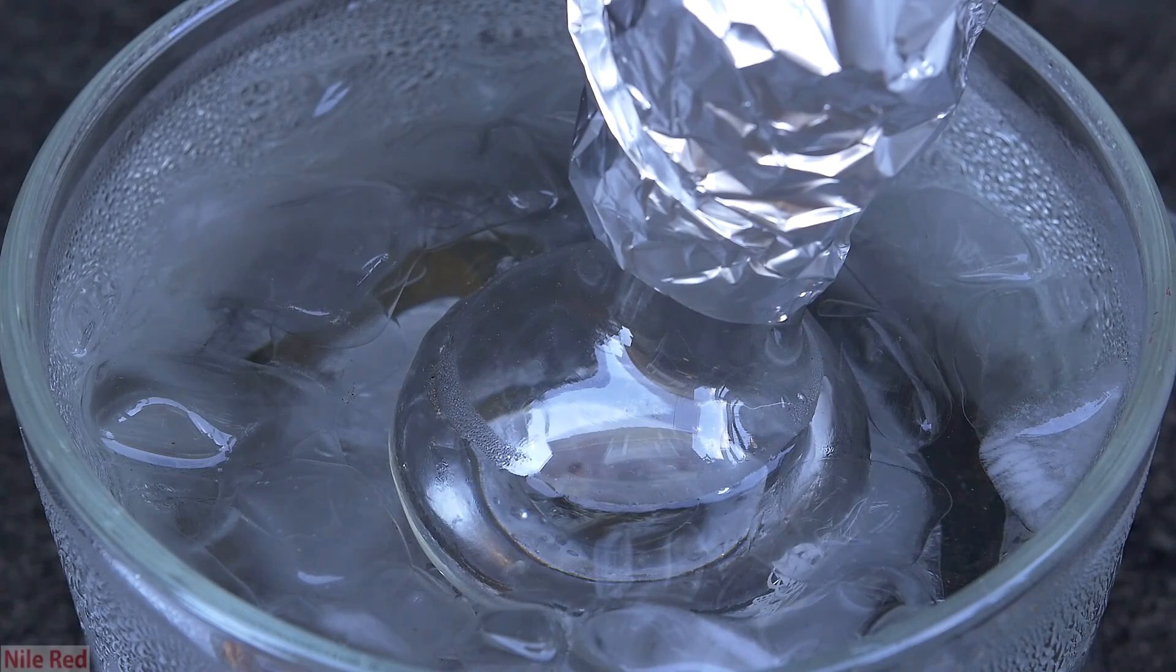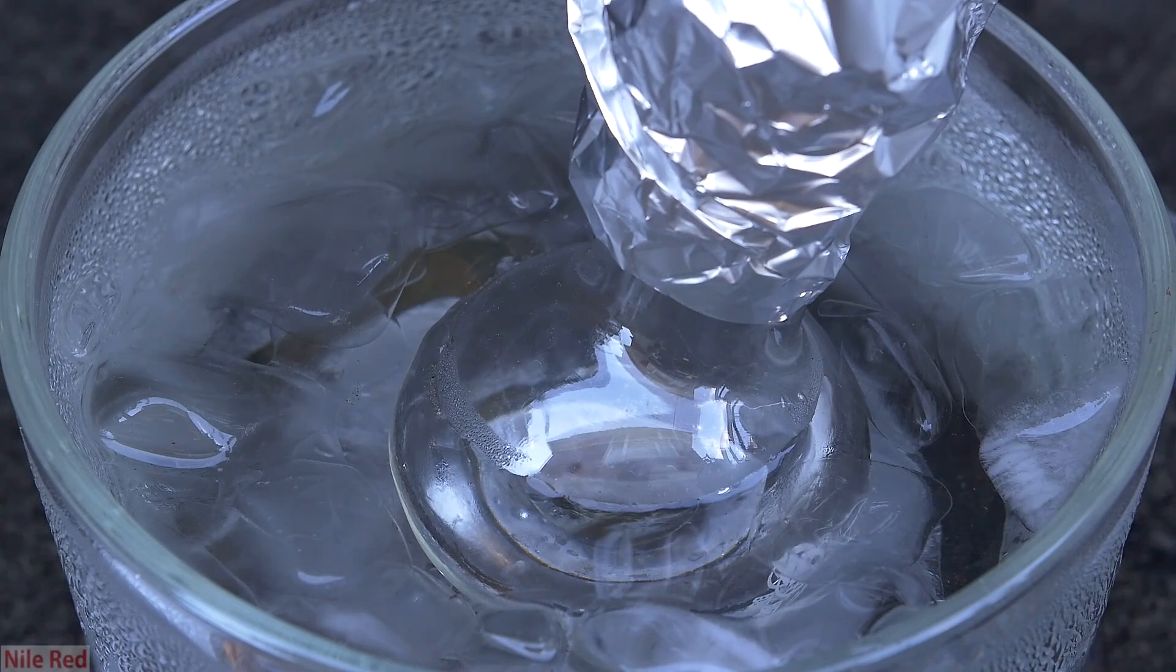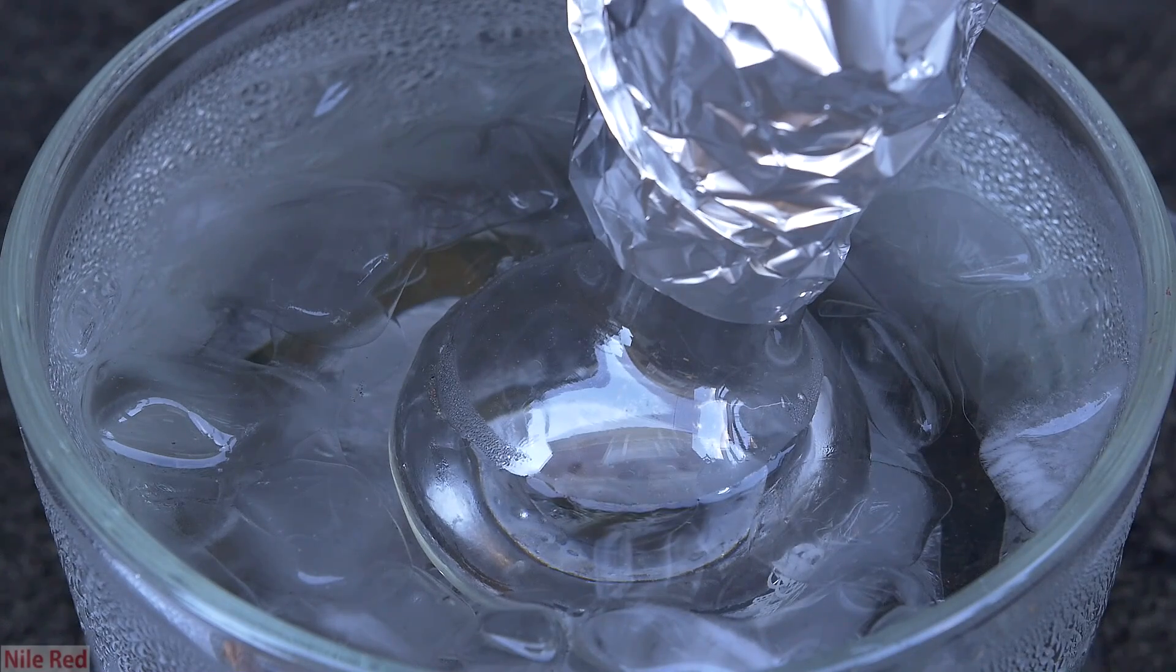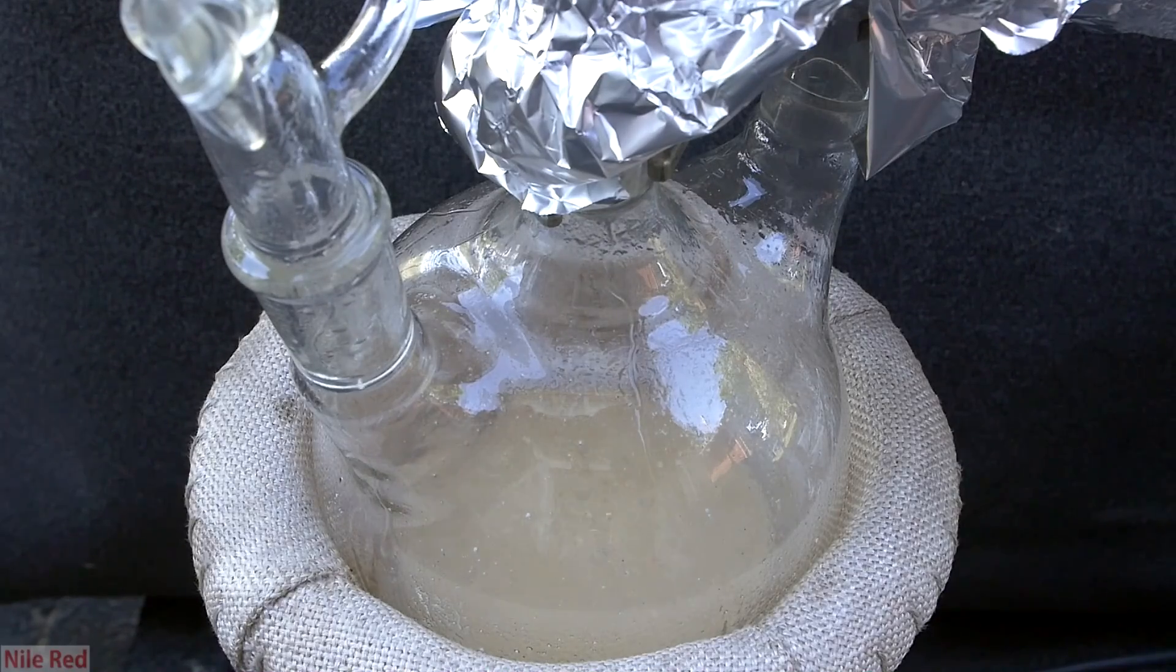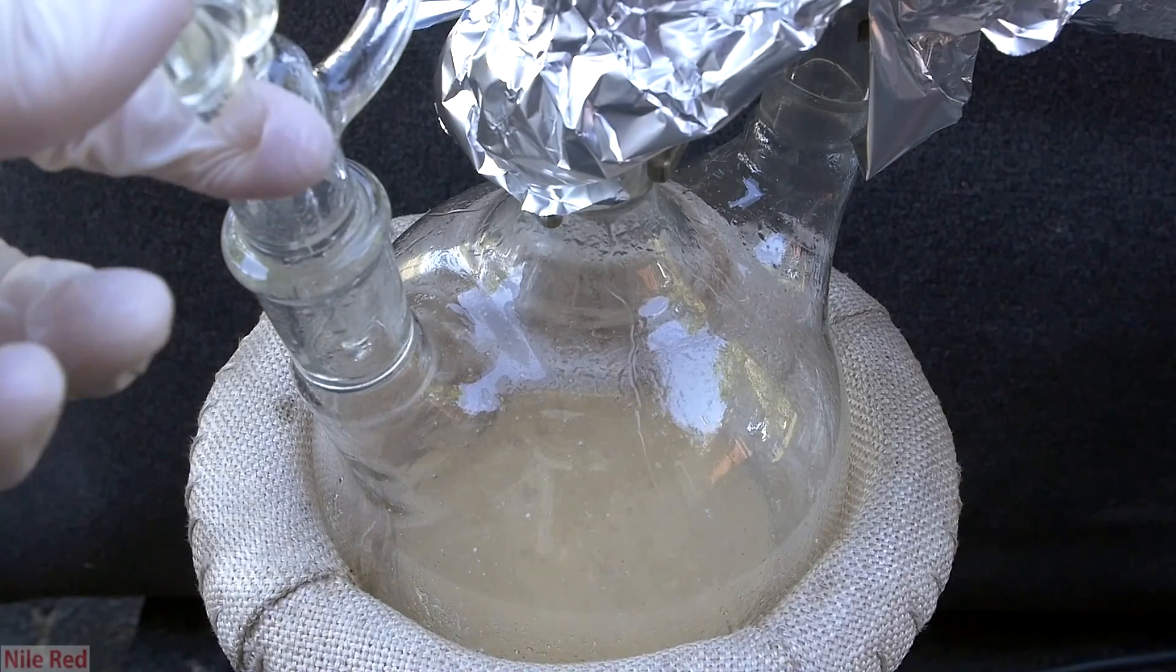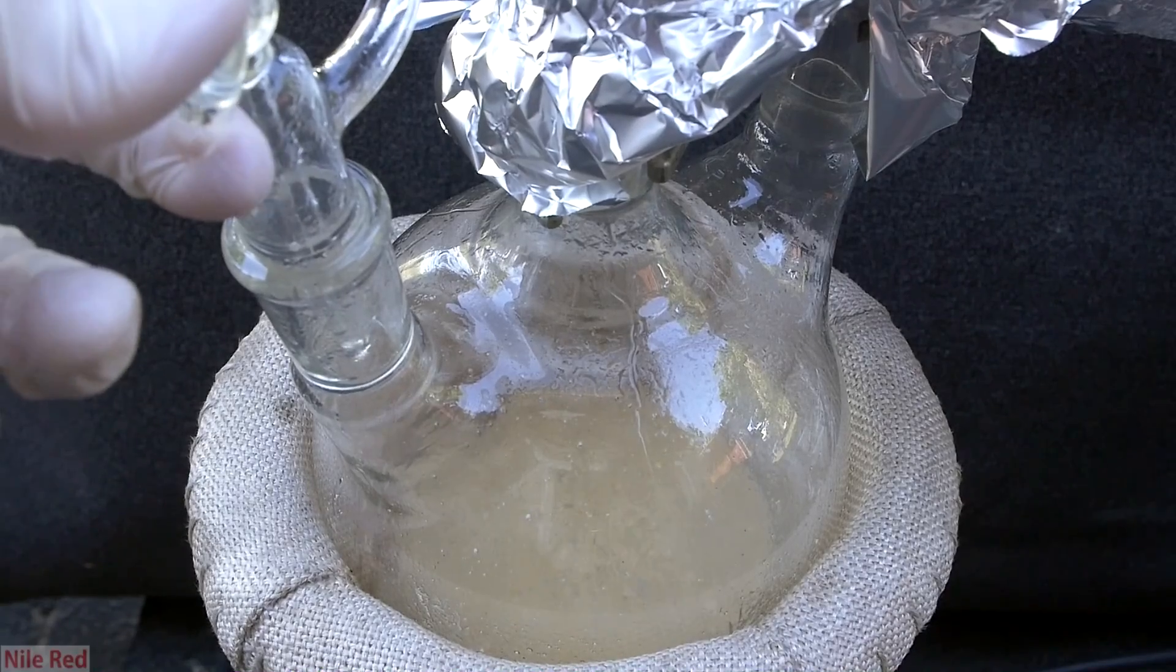I don't show it here, but I covered the entire bowl with aluminum foil to again prevent polymerization. After we started to collect some stuff in the receiving flask, I open up the addition funnel, and I start to slowly add more glycerol.